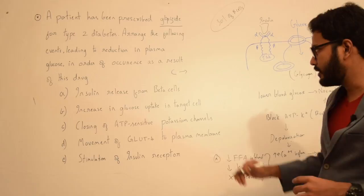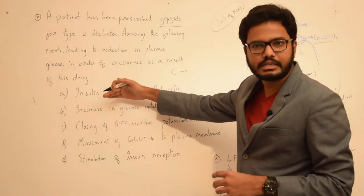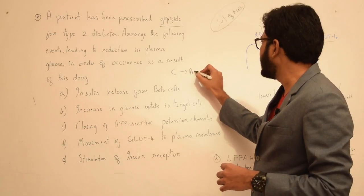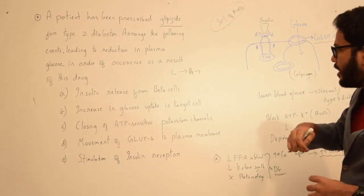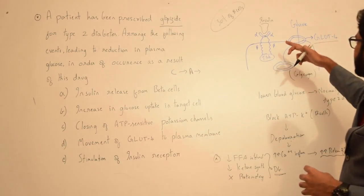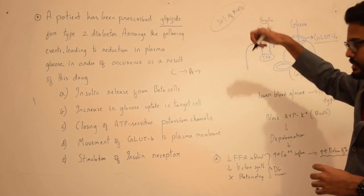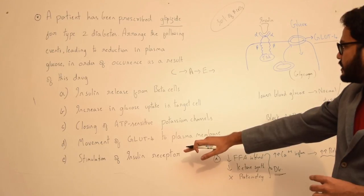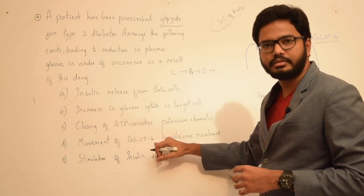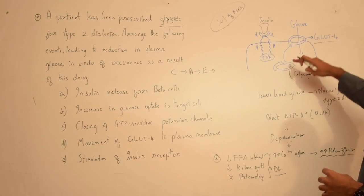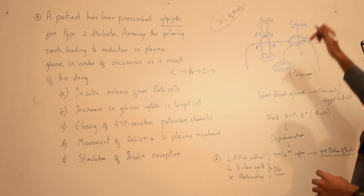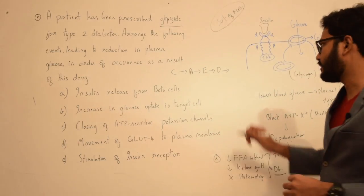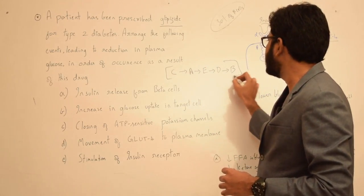Closing of ATP-sensitive potassium channels leads to release of insulin from the beta cells — option A. This is followed by stimulation of the insulin receptor — option E. After stimulation of the insulin receptor, there will be movement of GLUT4, the glucose transporter, to the plasma membrane — option D. And finally there is an increase in glucose uptake in the target cell — option B. So the correct sequence is C → A → E → D → B.